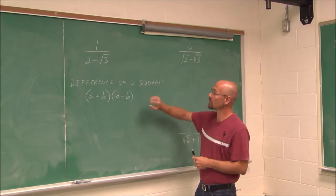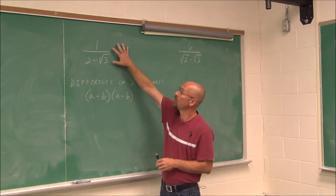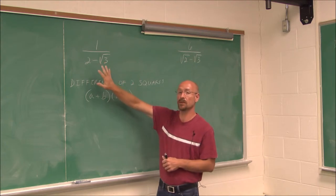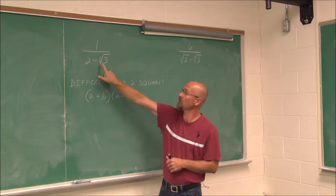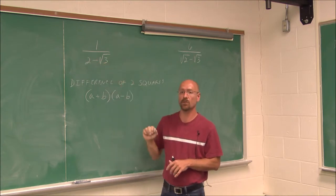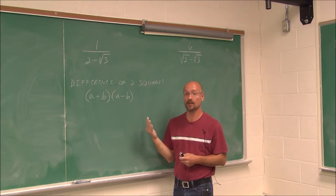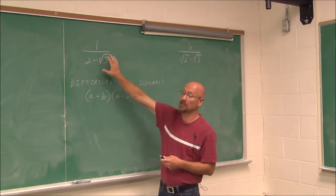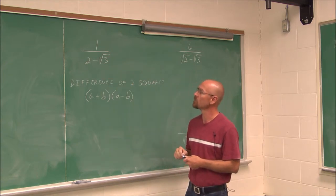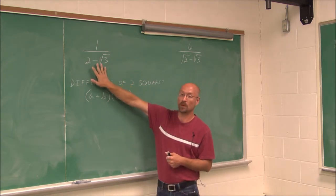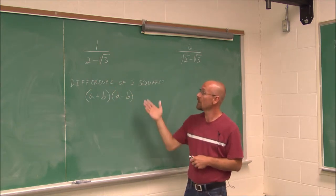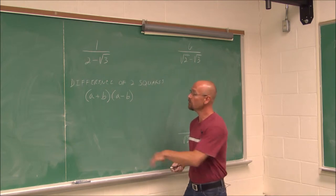We have a few more examples to look at. Here we have 1 over (2 minus the square root of 3). This is different from the other examples we've seen because it has a sum or difference in the denominator that contains a radical. In order to rationalize this denominator, we have to find a way to get any square roots or radicals out of the denominator. To do that with a sum or difference, we have to use a tool called the difference of two squares.